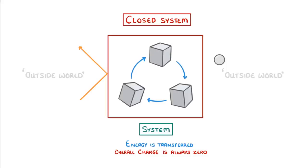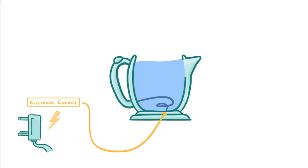To understand how this actually works in practice, let's take a look at a couple of examples. Imagine we have a kettle, and we fill it with water. When we turn it on, electrical energy from the plug socket flows to the heating element of the kettle, where it's transferred electrically to the thermal energy store of the kettle's heating element.